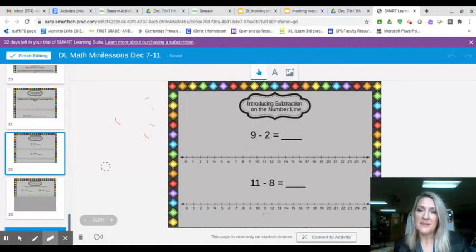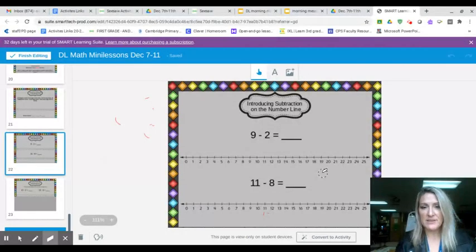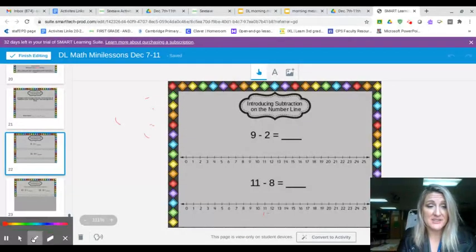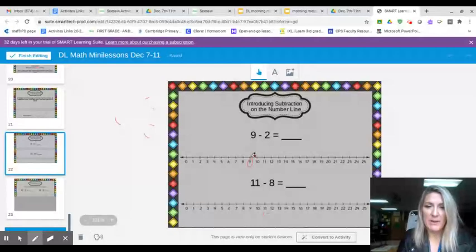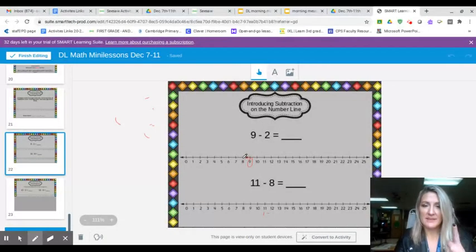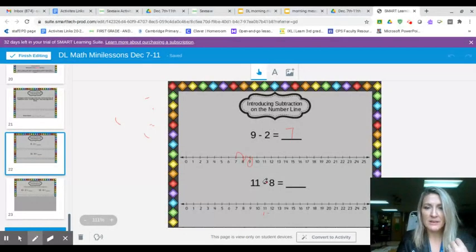Okay, these are both subtraction again. So start at nine. It says nine minus two. Well I can count backwards, but if you use a number line it looks like this. Start at nine, count back two: eight, seven. Oh, that was two. What's nine minus two? Seven. Let's try eleven minus eight.